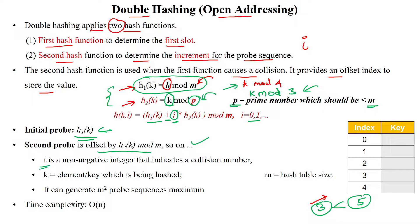Here i is a non-negative number because it is the probe sequence, and k is the input value. There is the possibility of generating a maximum of m² probe sequences. The time complexity is O(n), where n is the table size.